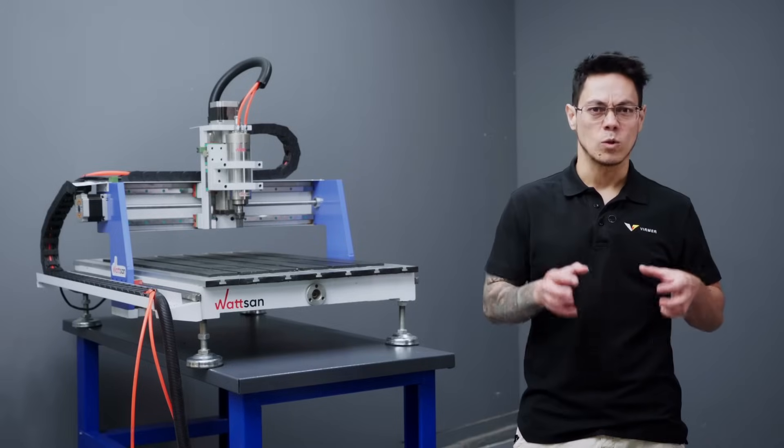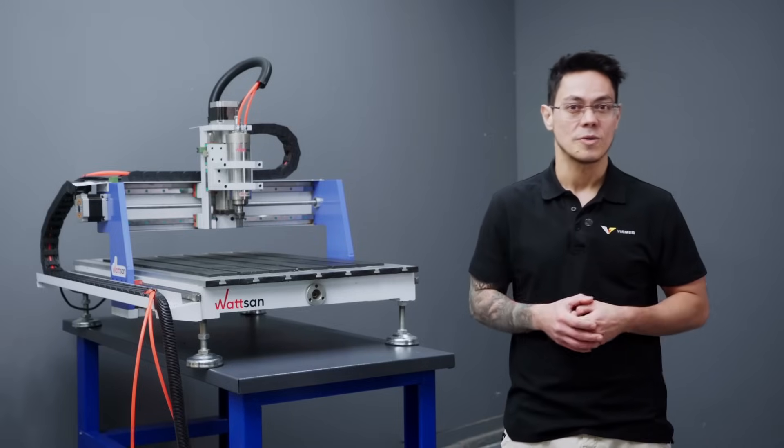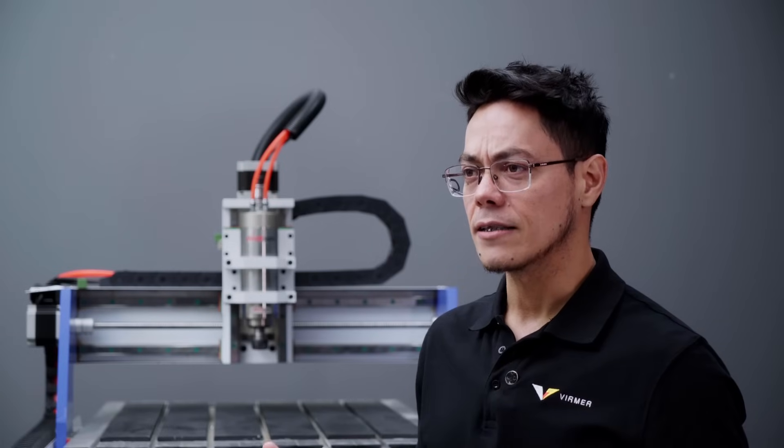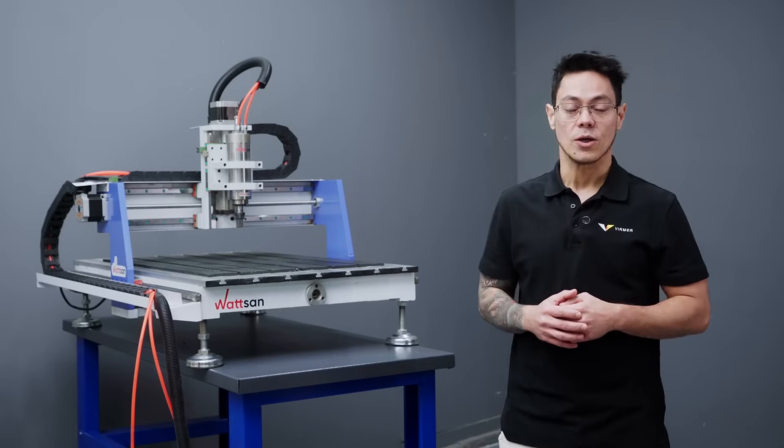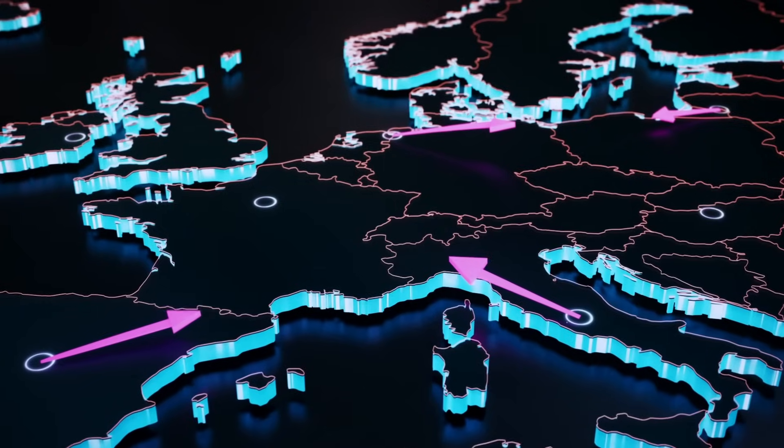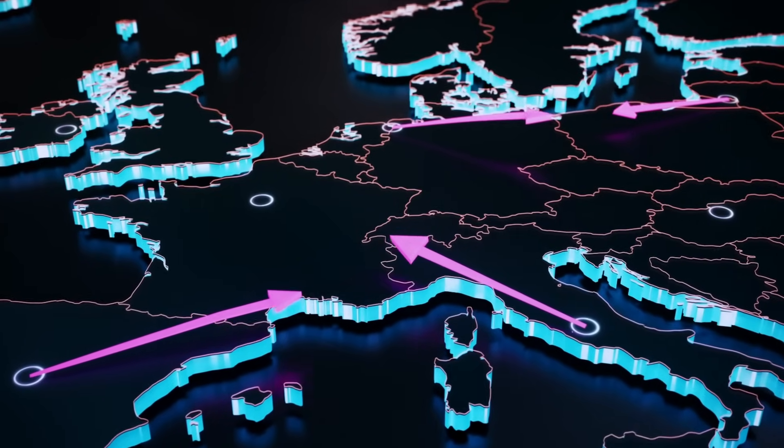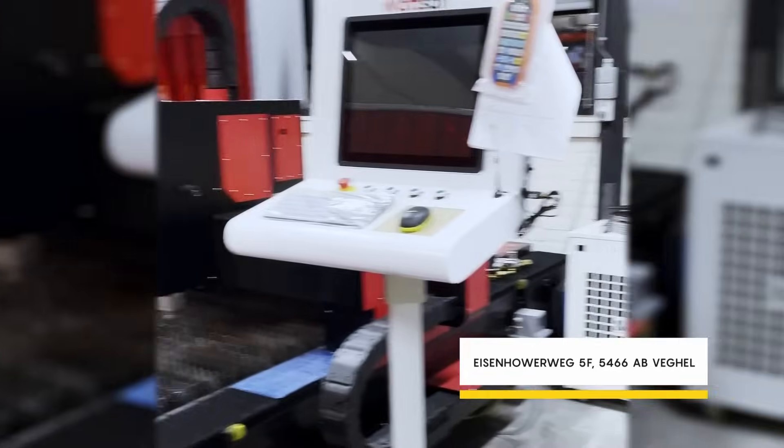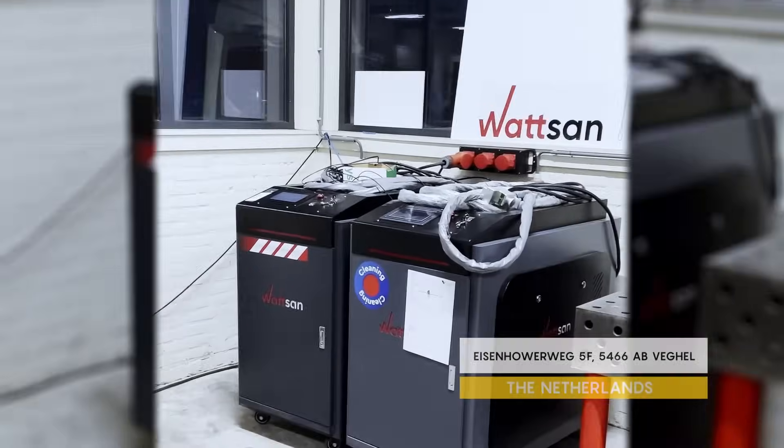The Watson 0609 mini is a compact router that will provide you with solid support as you launch your business. Should you ever need assistance, Virmur is always here to help you. We offer comprehensive service and training with our engineers operating across Europe. Additionally, we have a showroom in the Netherlands where you can see the machines in action or test your materials.